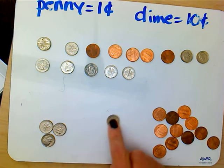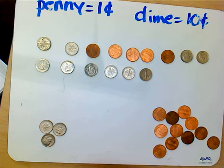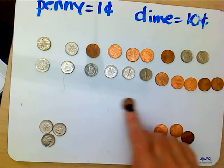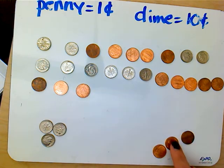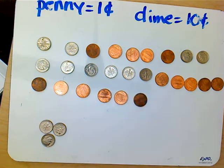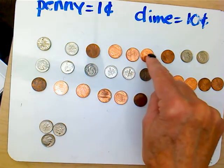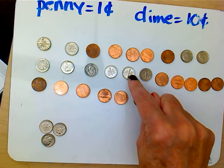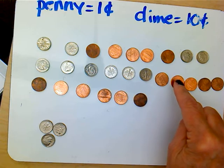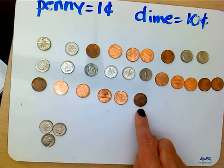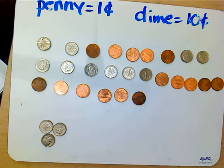What if I put in another dime? Would that give me 105, 106, 107, 108, 109, 110, 111, 112, 113, 114, 115, 116? So I have 116. Alright, there you go — counting using 10s and 1s, using my dimes and my pennies. You can try more of these by yourself if you would like to.